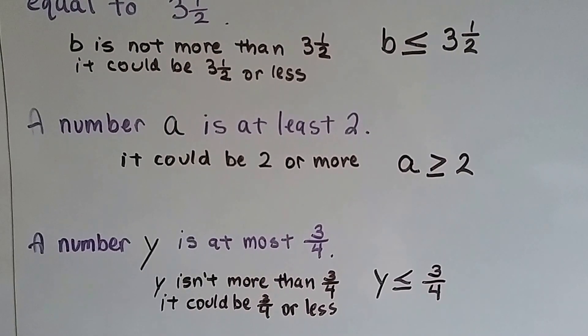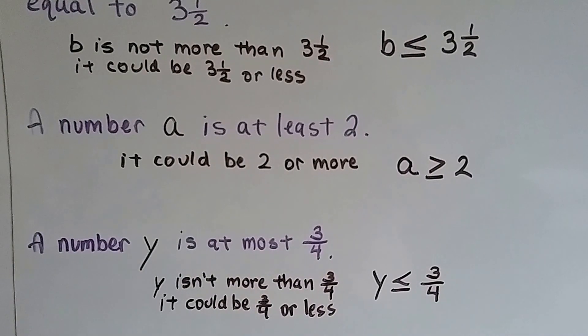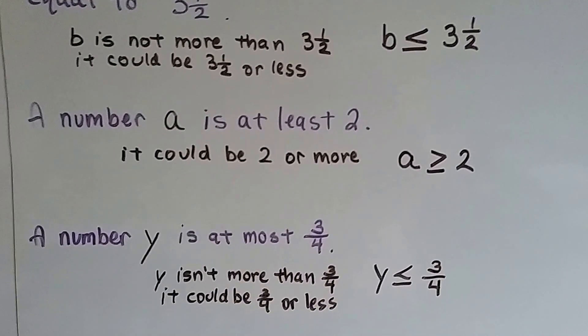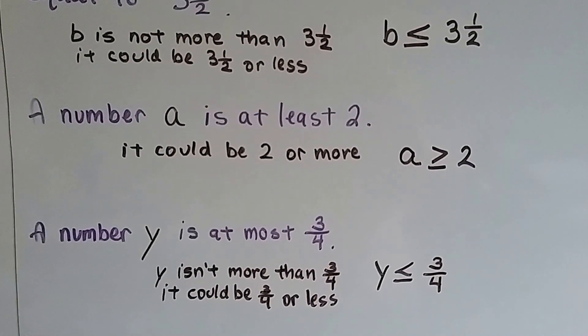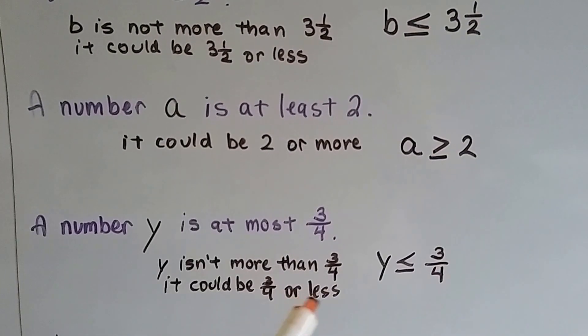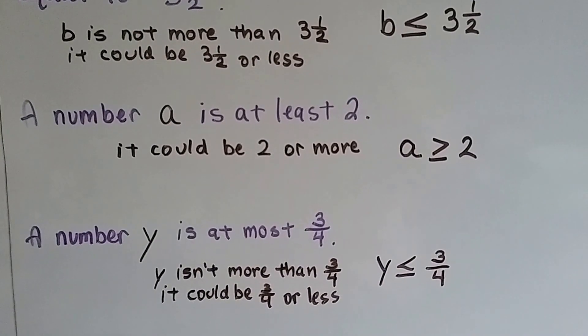If I said I'm going to give you 3 fourths of a million dollars at most, 3 fourths of a million dollars, that means I'm not going to give you any more than that. I could give you any amount less, right? I might give you 3 fourths of a million dollars, but I'm not going to give you more than that. So, it isn't more than 3 fourths. It could be 3 fourths or less. So, that means y is less than or equal to 3 fourths.